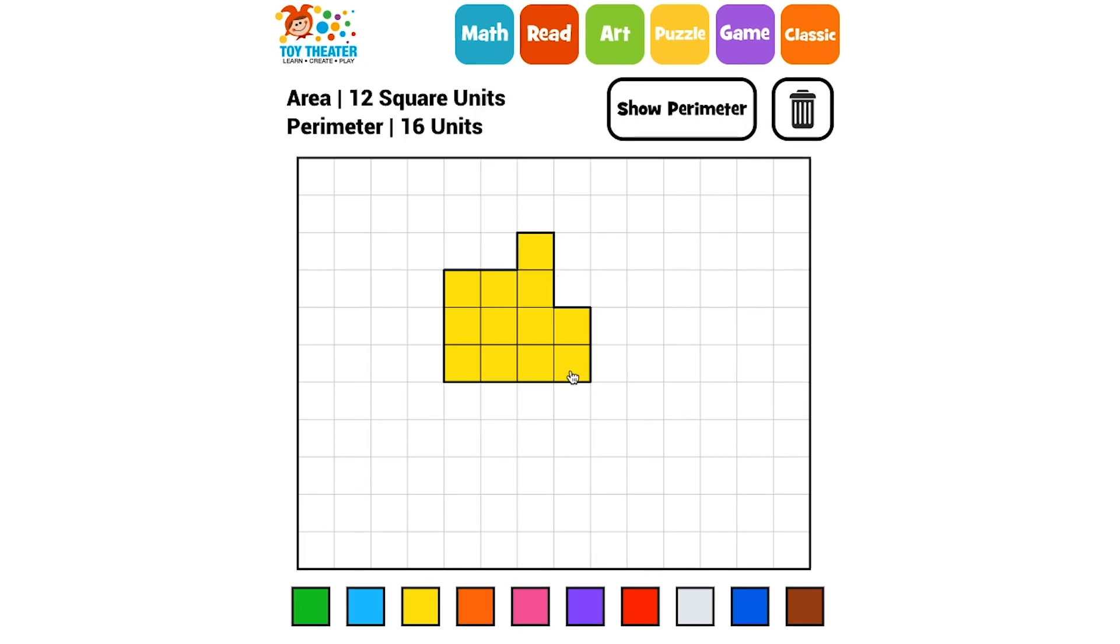Even if we arrange the squares in different ways, as long as all the squares are bordering each other, the area of the shape is still 12 square units.